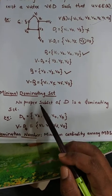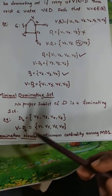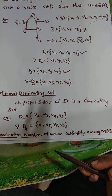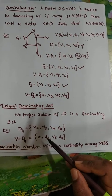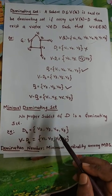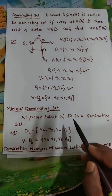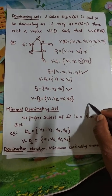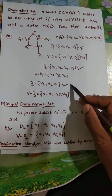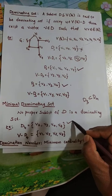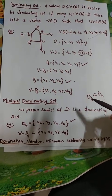Next, the definition of a minimal dominating set: a subset D is said to be a minimal dominating set if there is no proper subset of D that is itself a dominating set. For example, consider D4 = {V2, V3, V4, V7}. Since D3 = {V2, V3, V4} is a proper subset of D4 and D3 is a dominating set, D4 contains a proper dominating subset. Therefore, D4 is not a minimal dominating set.